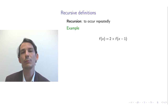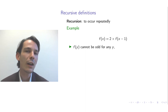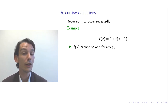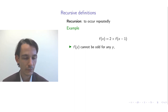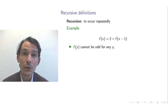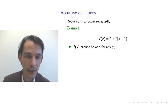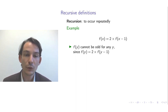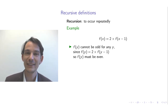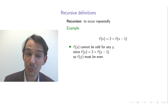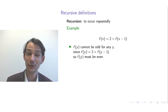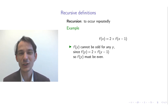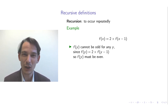Does there exist a function? Suppose one exists — then analyze it. For an arbitrary y, f(y) cannot be odd. Why? Because f(y) must equal 2 times f(y−1) according to the specification. But 2 times any number must be even, so it cannot be odd. Therefore f(y) cannot be odd for any y — the function, if it exists, must be even for all its arguments.